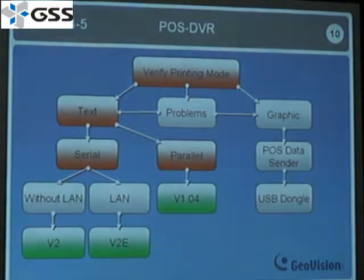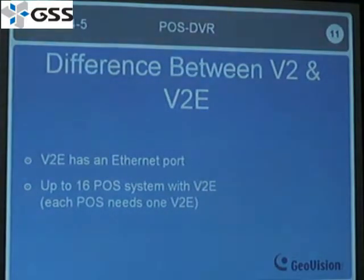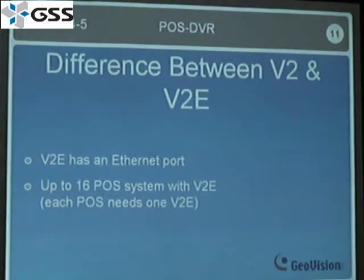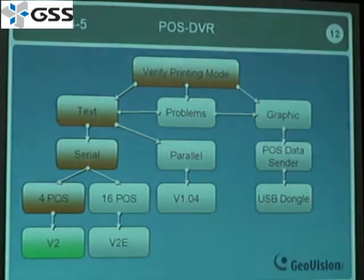Before we begin, let's talk about the difference between V2 and V2E. V2E basically has all the functionalities of V2, but it also has an Ethernet port and can be used in a LAN environment. With V2E, you can connect up to 16 POST systems to our DVR — each POST will need its own V2E, so if you have 16 POST systems, you'll need to purchase 16 V2E boxes. If you only have four POST systems or less, data capture V2 is sufficient.